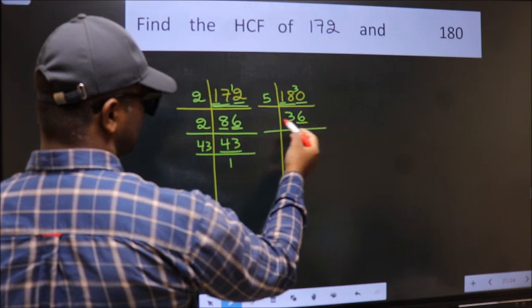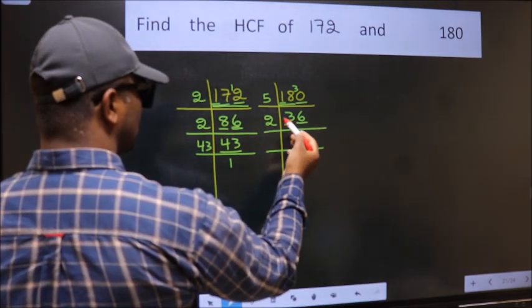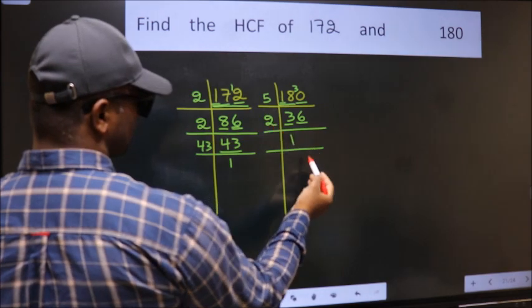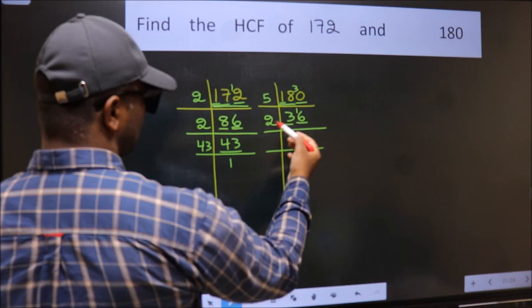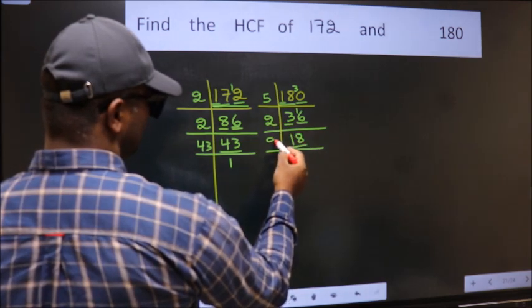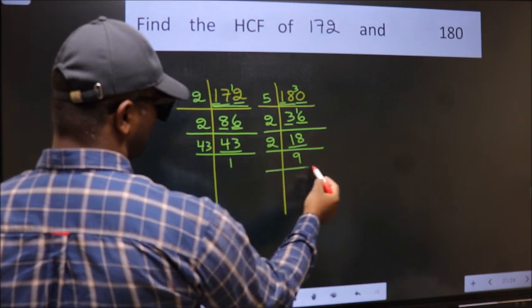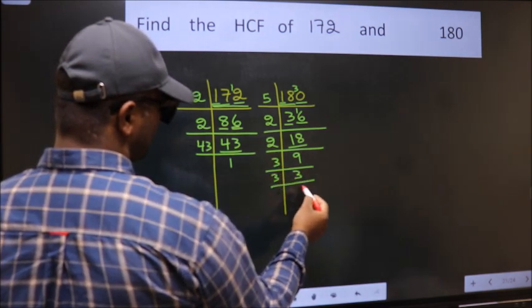Last digit is even, so take 2. First number 3. A number close to 3 in 2 table is 2×1=2. 3-2=1, 1 carried forward makes 16. When do we get 16 in 2 table? 2×8=16. Now 18 is 2×9. 9 is 3×3. 3 is a prime number, so 3×1=3.